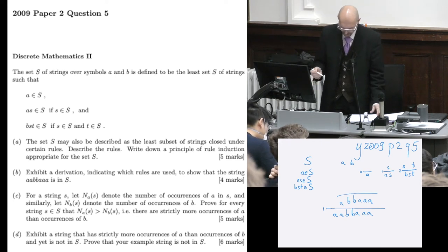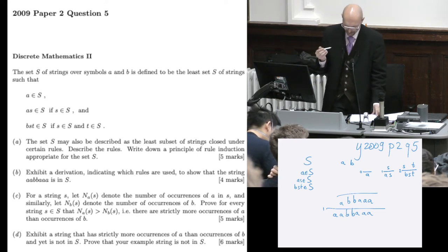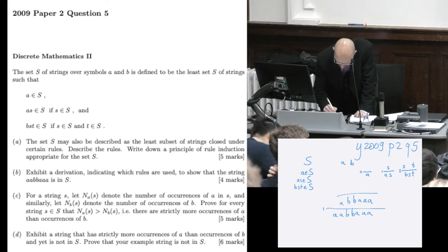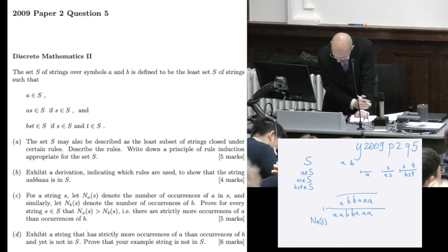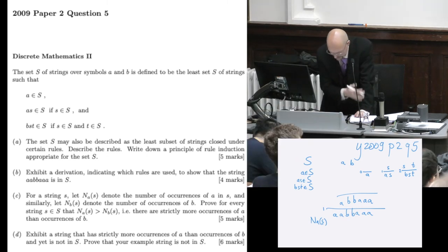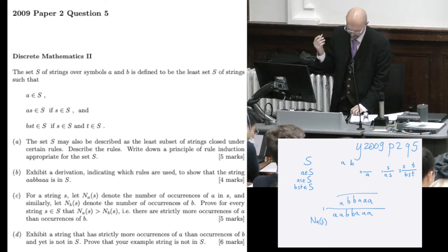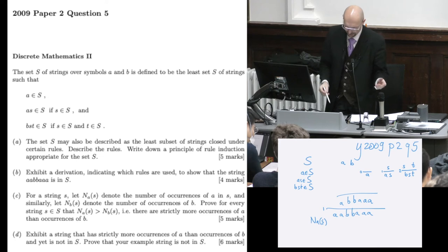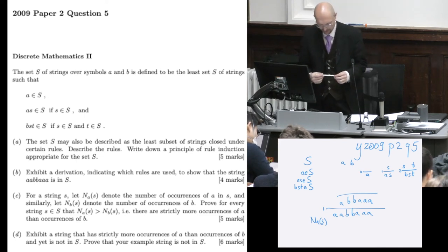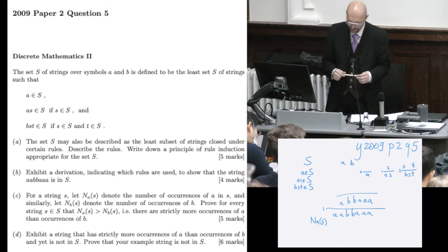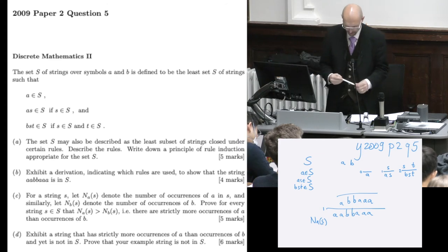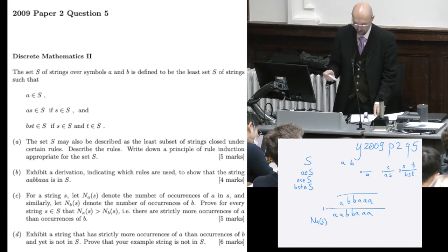Then, the next part, five marks. For a string S, let NA of S denote the number of occurrences of A in S. And similarly, let NB of S denote the number of occurrences of B. Prove for every string S in big S, that NA of S is greater than NB of S, i.e., there are strictly more occurrences of A than occurrences of B. And this is something that you do by applying the theorem we just saw.